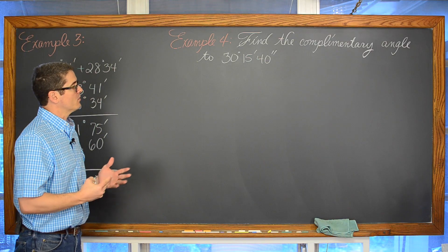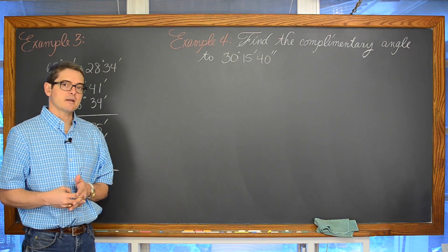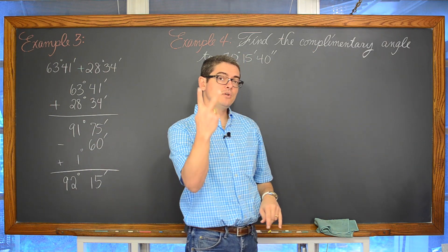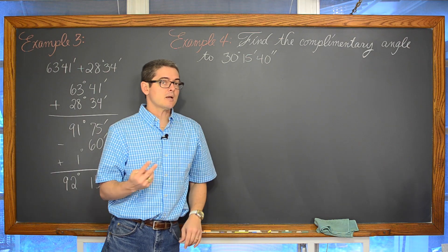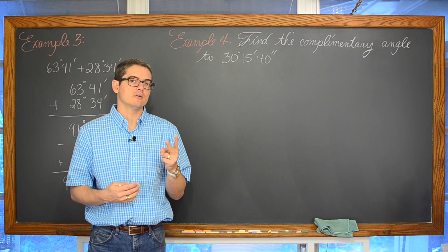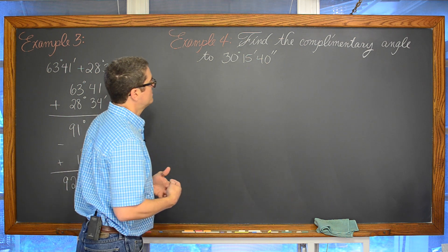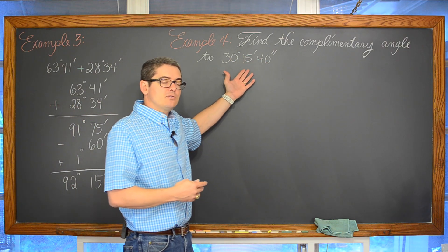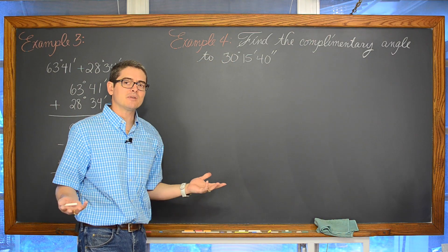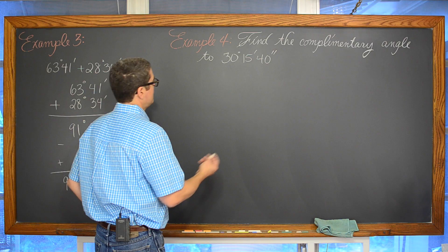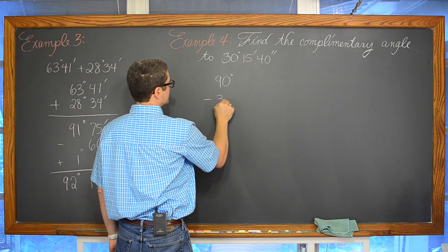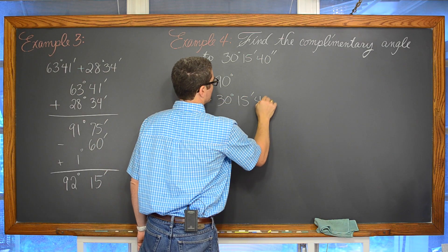Find the complementary angle to 30 degrees, 15 minutes, and 40 seconds. We have to understand what complementary means: complementary angles are two angles that add to 90 degrees. Supplementary angles are two angles that add up to 180 degrees — some vocabulary you need to know. So we are going to do 90 degrees take away 30 degrees, 15 minutes, and 40 seconds.